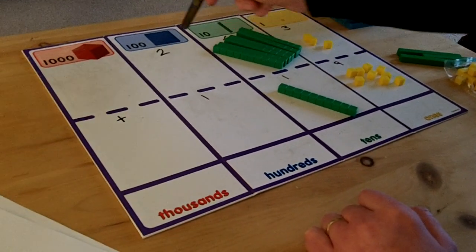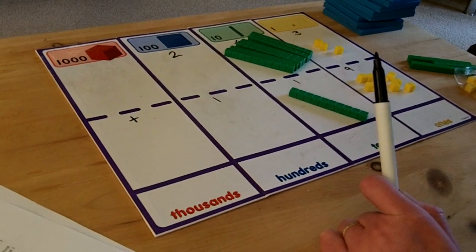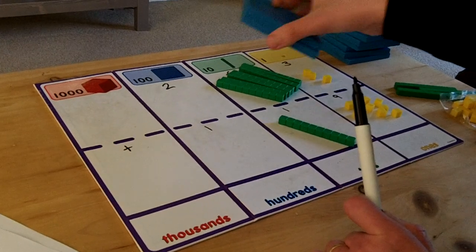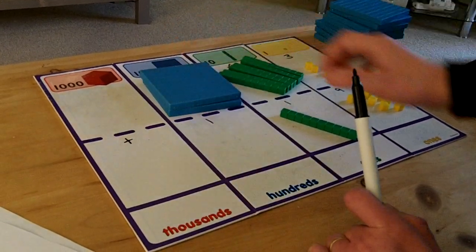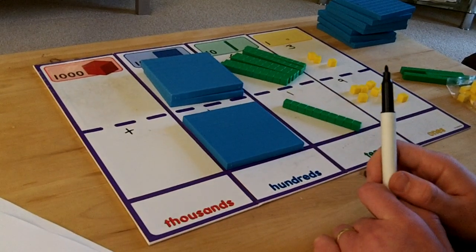In my hundreds column I have got 2 and 1. These represent 200 and 100 so I must use my blocks of 100 cubes. I must put 2 on top of the 200 and put 1 on top of the 100 to show this.